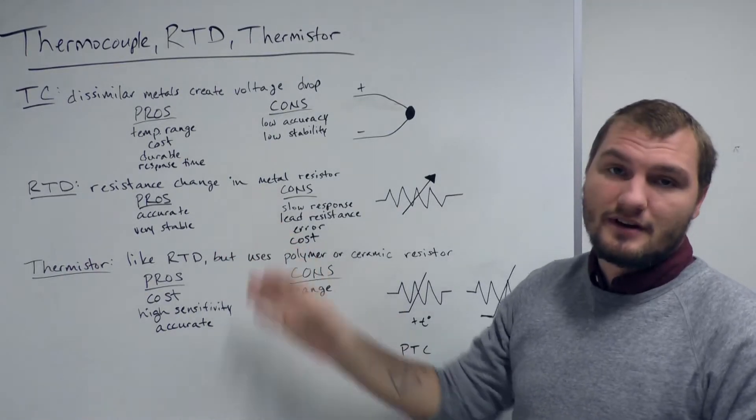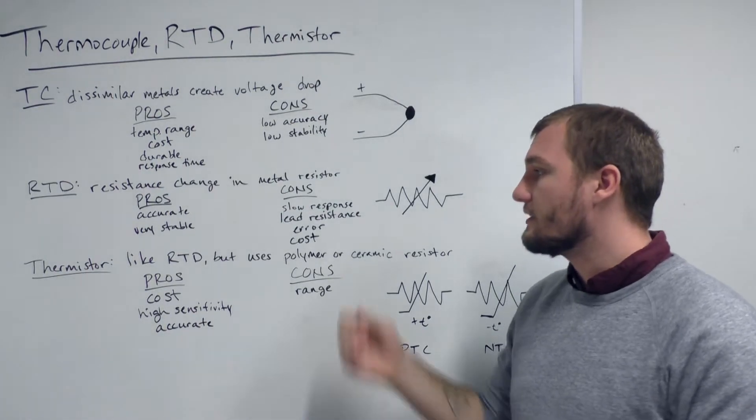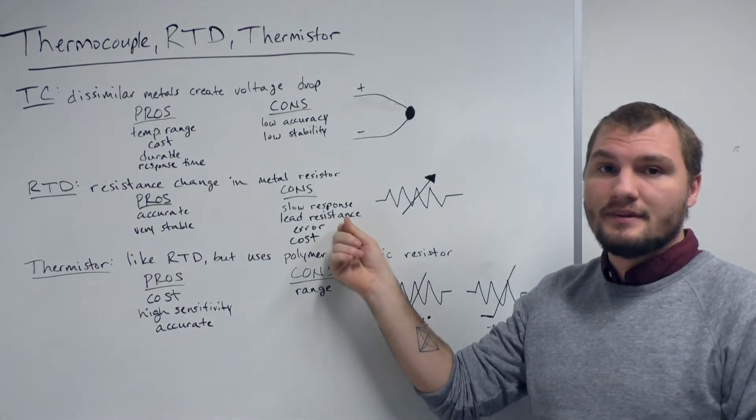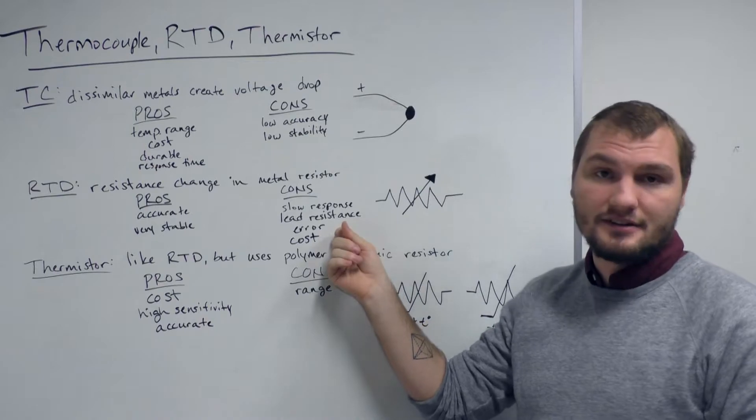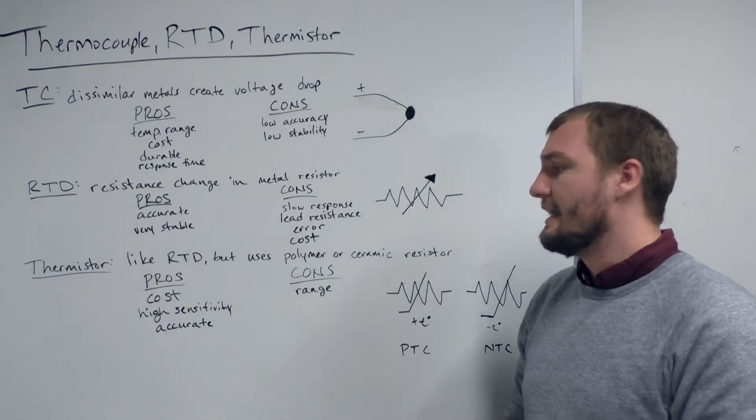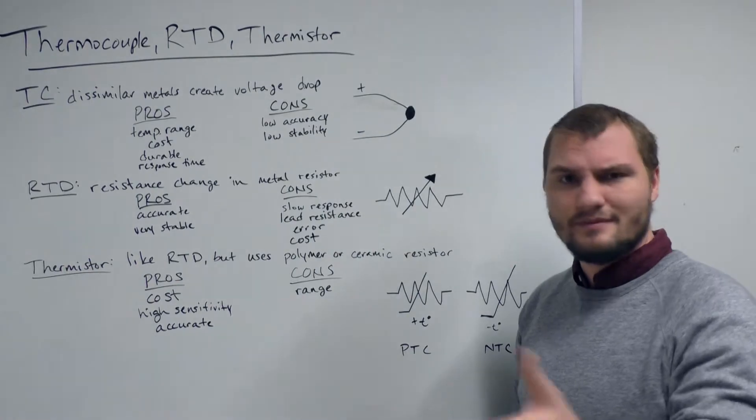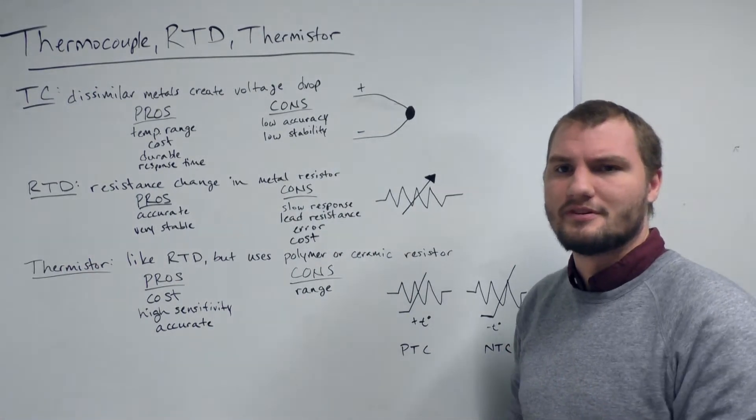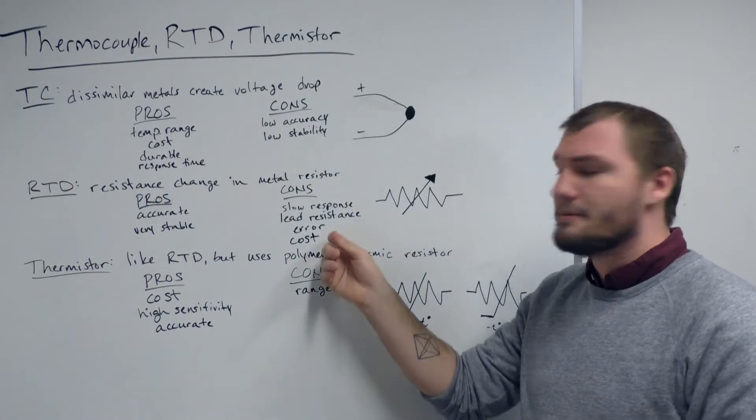Some of the advantages are that these tend to be very accurate and very stable. However, they have a slow response time. Lead resistance error can be a big factor since you're typically dealing with lower resistances with RTDs and smaller resistance changes, somewhere about 500 milliohms per degree C, and they tend to be very expensive.